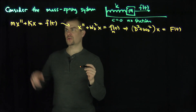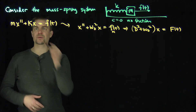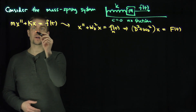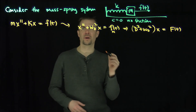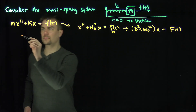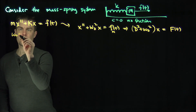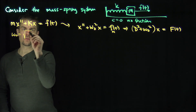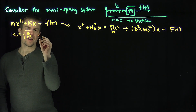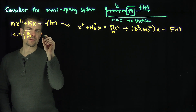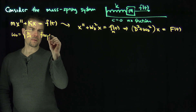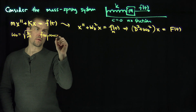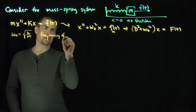What is ω₀ squared? ω₀ is the square root of k over m. This is called the frequency of the spring.